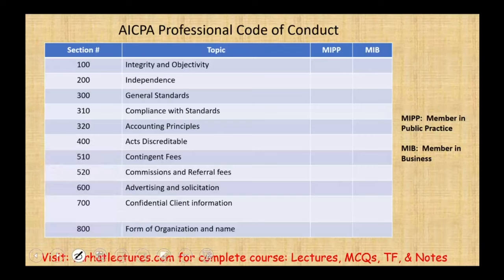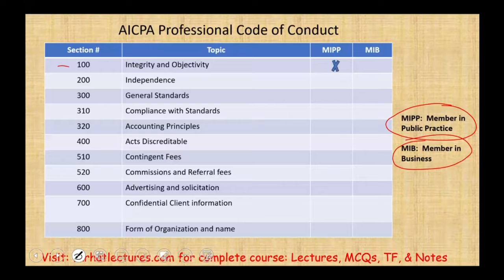Let's take a look at this AICPA Professional Code of Conduct Summary and determine which rules apply to the members in public practice and which rules apply to members in business. Starting with integrity and objectivity, it will apply to both members in public practice and members in business.